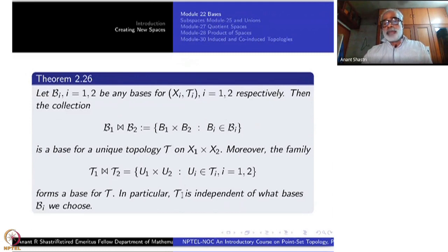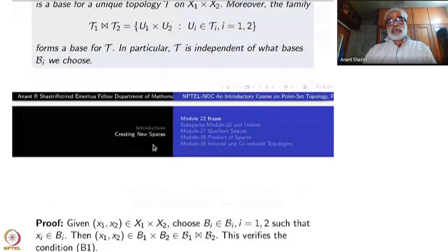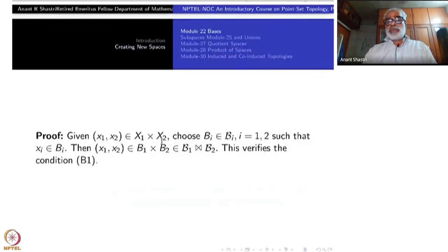So this topology tau is independent of what basis you choose. I have to show two things: first, that B1 join B2 is a base, then that tau1 join tau2 also generates the same topology. Given (x1, x2) in X1 cross X2, since B_i's have the base property, I can choose b_i in curly B_i such that x_i is inside b_i. Then (x1, x2) will be inside B1 cross B2, which is an element of B1 join B2. So condition B1 is verified.